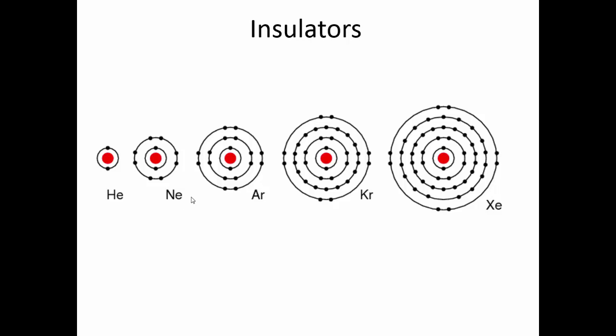Insulators are insulators because their electrons are held onto very tightly by the atom. When a shell is full, atoms are in a very stable state and don't like to let go of electrons. Insulators have full inner shells as well as full valence shells, so electrons are held very tightly, there are no free electrons for conducting, and that's what makes insulators good insulators.